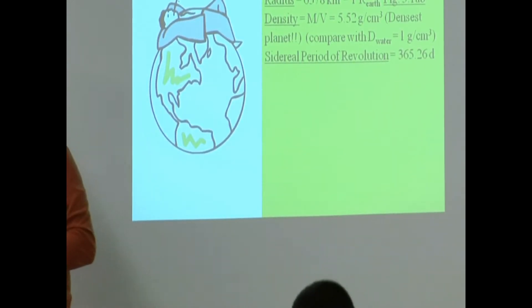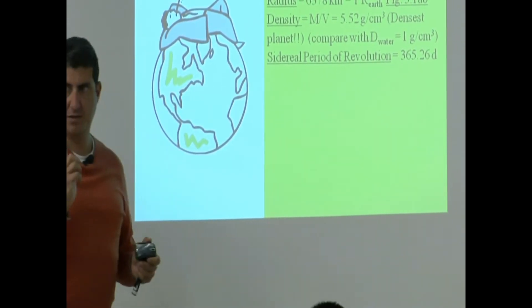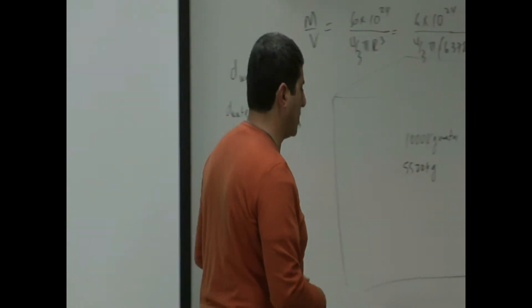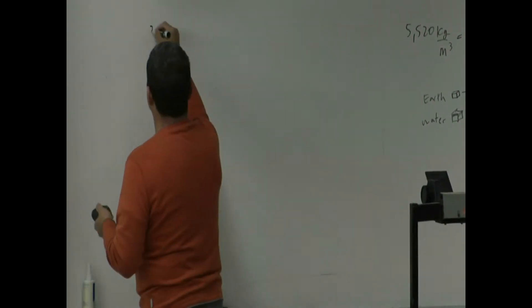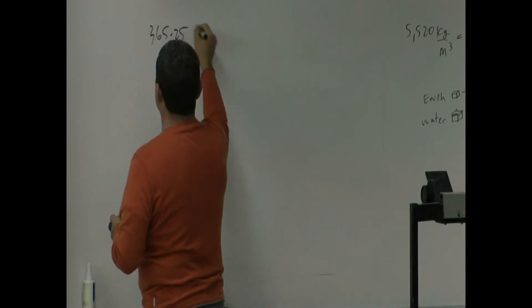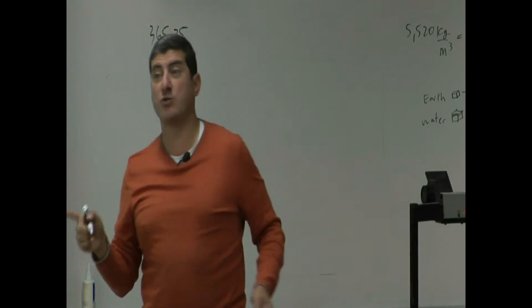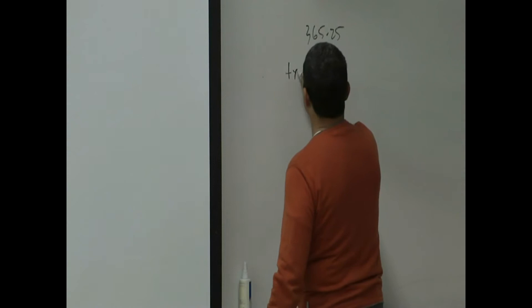Sidereal period of revolution — that means how many days does it take the Earth to go around the sun once? A lot of you already know this because we experience it every year: 365 days in a year. So a typical year has 365 days.